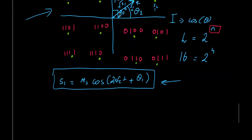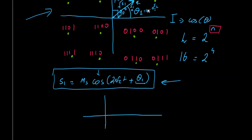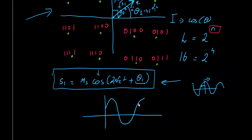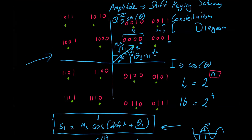In the time domain, this corresponds to a cosine waveform with a phase shift θ1. For example, if θ1 is approximately 45 degrees, the cosine function is shifted (delayed) by 45 degrees to the right. This time-domain waveform represents symbol s1 (binary '0000'), and that same signal is represented as a point in the constellation diagram.